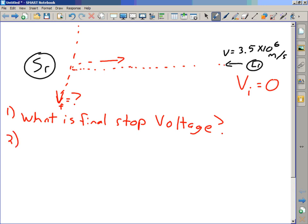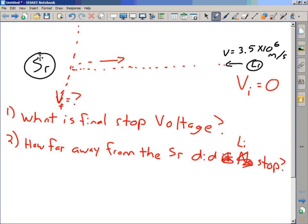One, find the final voltage. All right. Number two. Number two. I want you to find for me, if this is the case, what is the final stopping voltage? By the way, you can also find for me the delta V. Delta V is the final voltage here. Number two. How far away from the strontium atom did the lithium stop? In other words, I want you to solve for me, basically, R. Distance away. Please consider all these charges to be point charges.